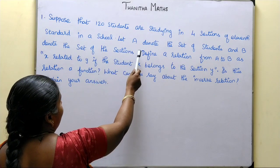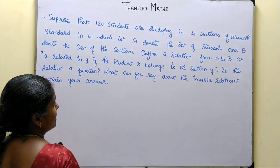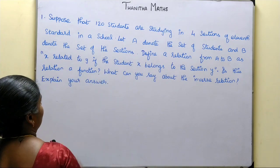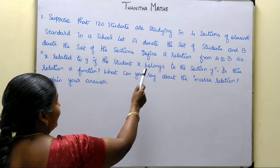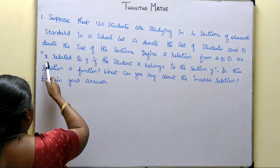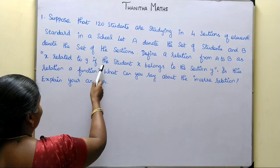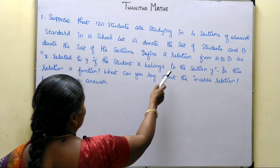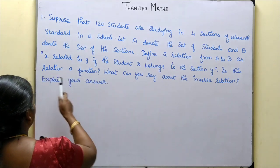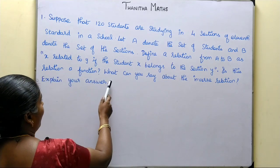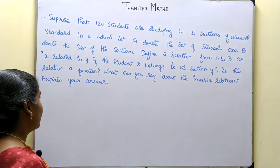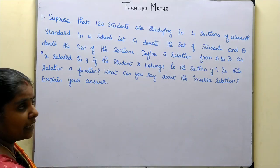Let A denote the set of students and B denote the set of sections. Define a relation from A to B as: x is related to y if the student x belongs to the section y. Is this relation a function? What can you say about the inverse relation? Explain your answer.